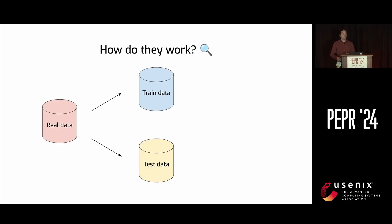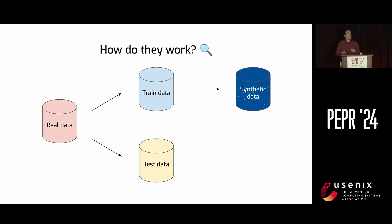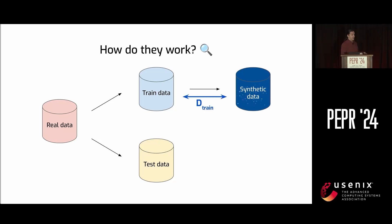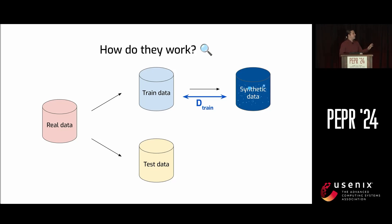The idea is relatively simple. First, you take your data and split it in two parts — the training data and the test data, kind of like what you do in machine learning. Then you use only the training data to generate your synthetic data. Then, and this is where it gets interesting, you compute the distance between the synthetic data and the training data. There are many ways to compute the distance between two distributions, but this is a measure of how similar the distributions are to each other.